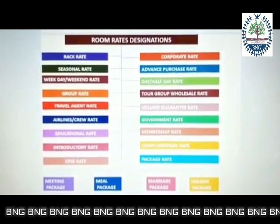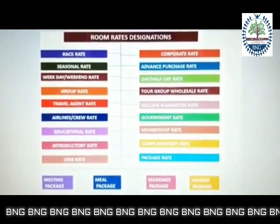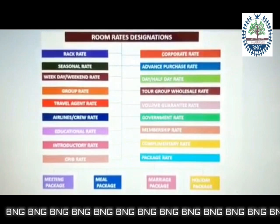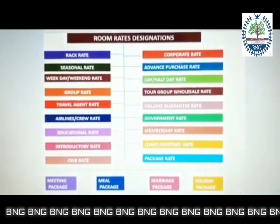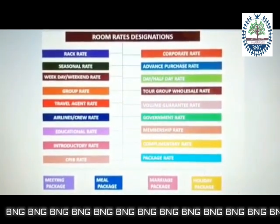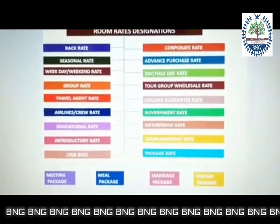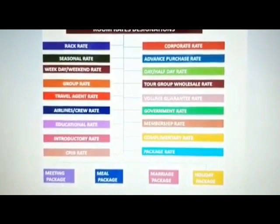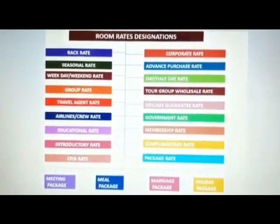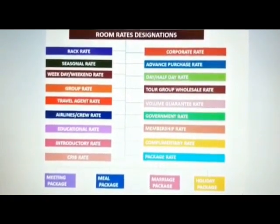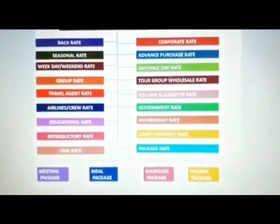These are the various room rate designations — students should make a copy in your front office journal for easy reference. There's rack rate, corporate rate, seasonal rate, advance purchase rate, weekday/weekend rate, half-day rate, group rate, tour group rate, travel agent rate, volume guaranteed rate, airline crew rate, government rate, educational rate, membership rate, introductory rate, complementary rate, crib rate, and package rate. Package rate is divided into four parts: meeting package, meal package, marriage package, and holiday package.